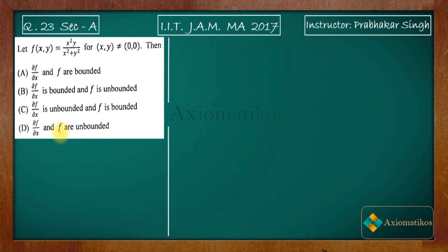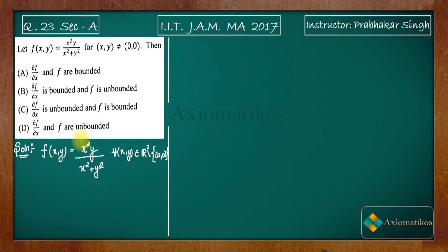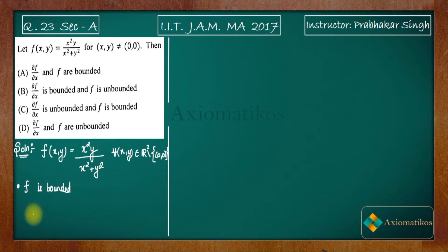Let us begin by writing the function f(x,y). We are given with this function and we have to check firstly the boundedness. So firstly I will check the boundedness of f — whether f is bounded or not.